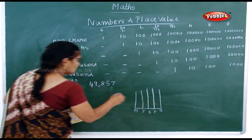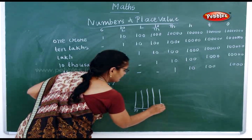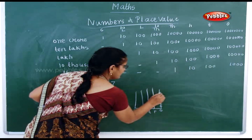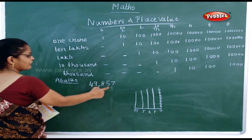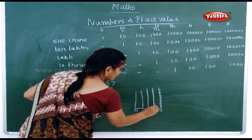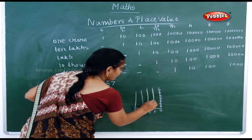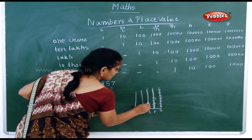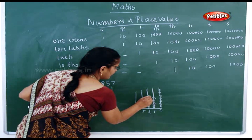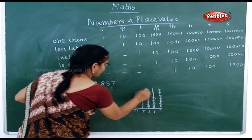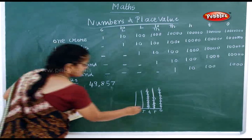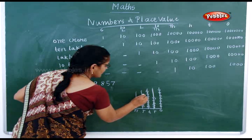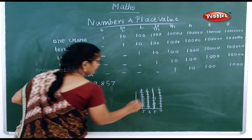For 49,857 on the abacus: you place 7 rings in the ones, 5 rings in the tens, 8 rings in the hundreds, 9 rings in the thousands, and 4 rings in the ten thousands place.